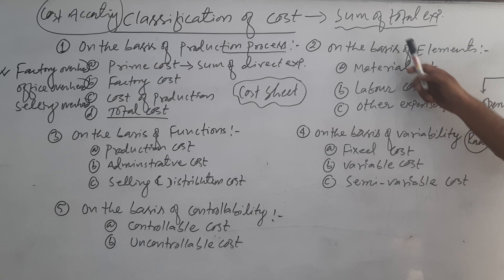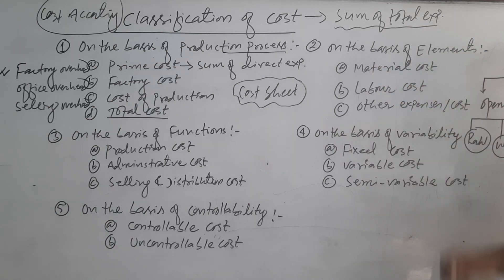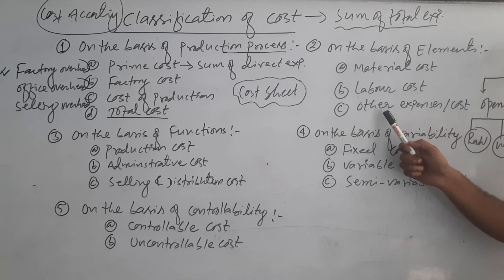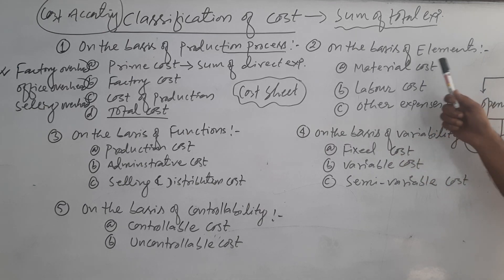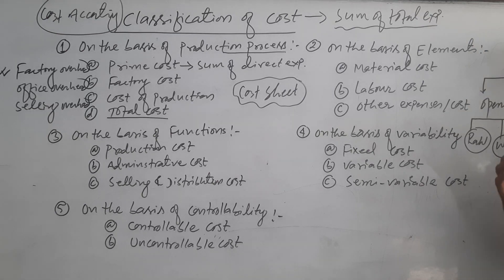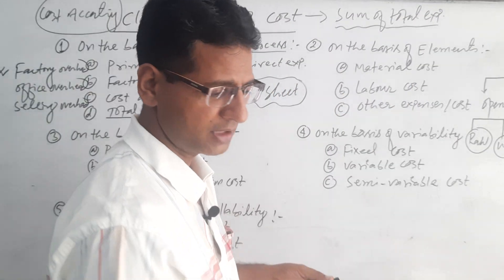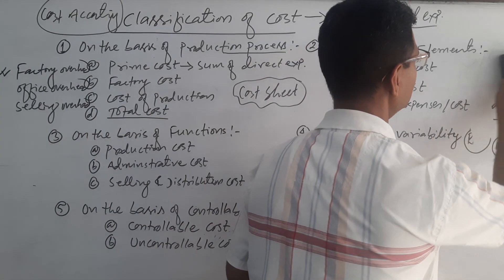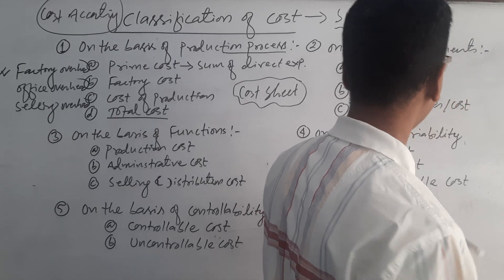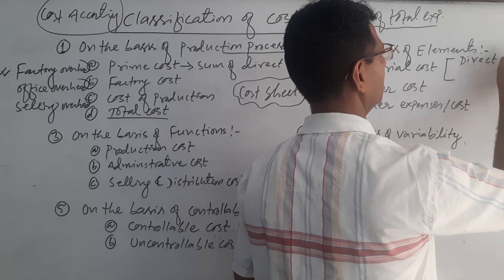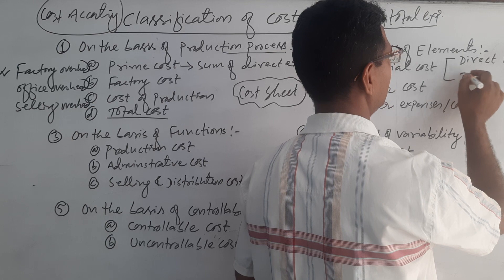The second classification of cost is on the basis of elements. There are three major elements: one is material, second is labour, and third is other expenses. Without purchasing raw materials, we cannot produce any goods. For production of goods, we need to purchase different types of material. Every material has two types — one is direct material and another is indirect material. Similarly, labour also has direct and indirect types, and other expenses also have direct and indirect types.